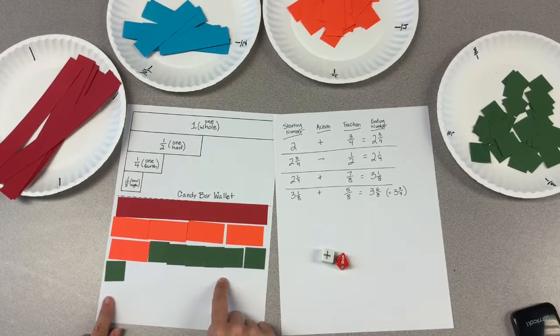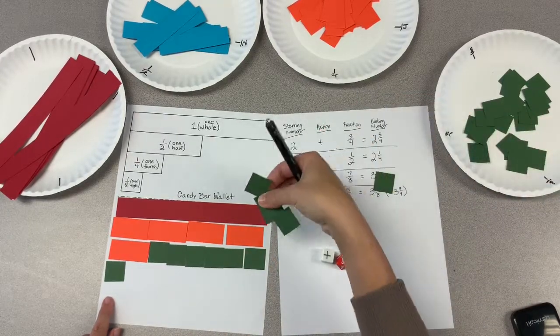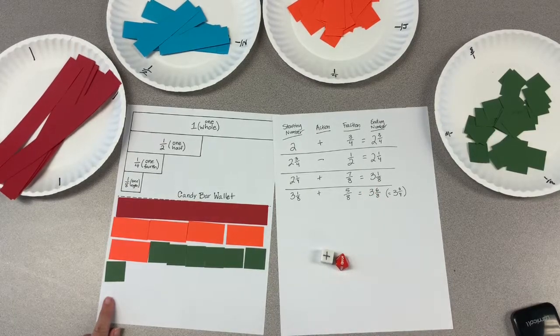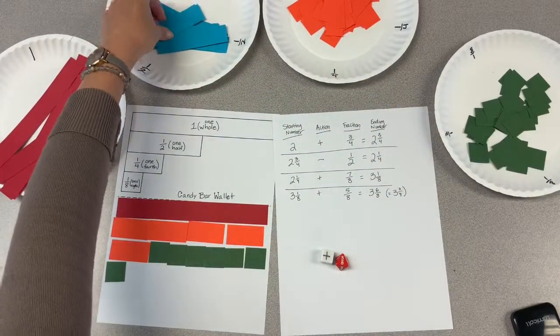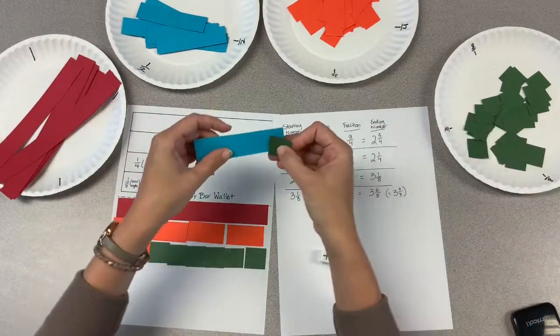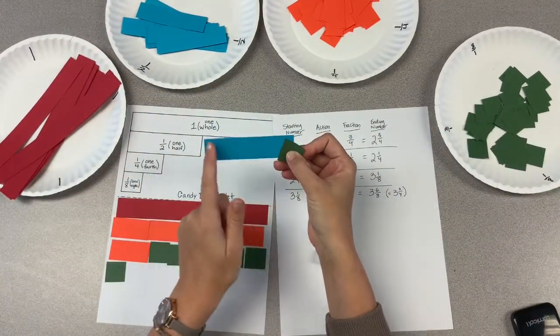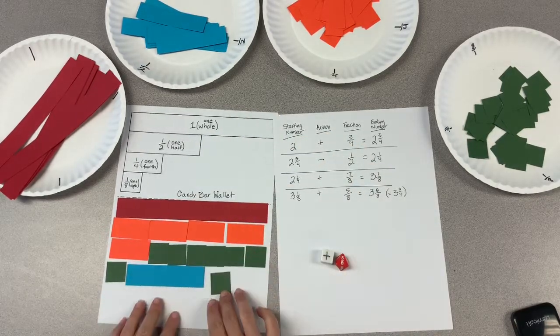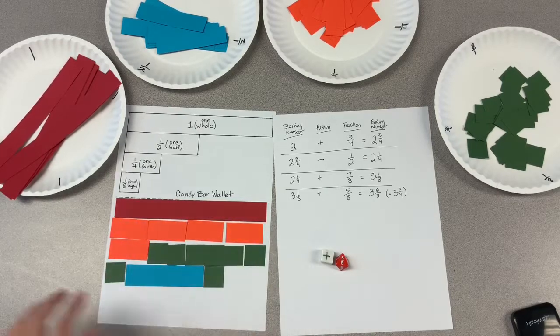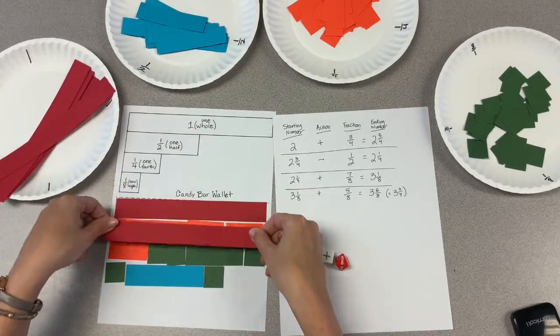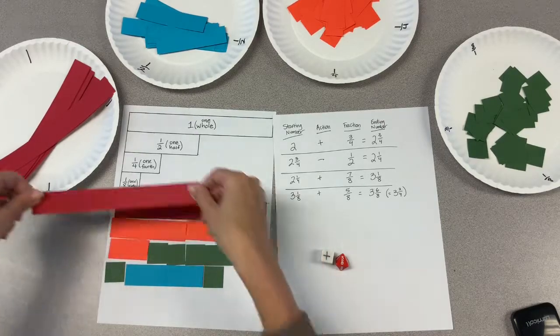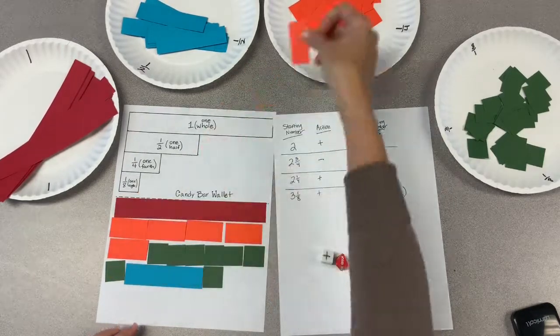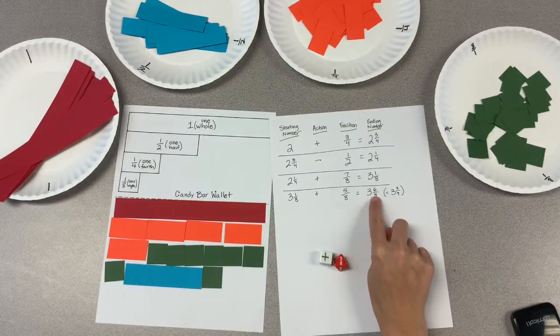And for challenge, I might not even have them pull out five more eighths. I might say, can you find five eighths in a different form? For this one, I know five eighths is equal to one half, which is four eighths plus one more eighth. So I'm going to add that to my group. I'm going to double check that I have three wholes and three fourths or three and six eighths to match.